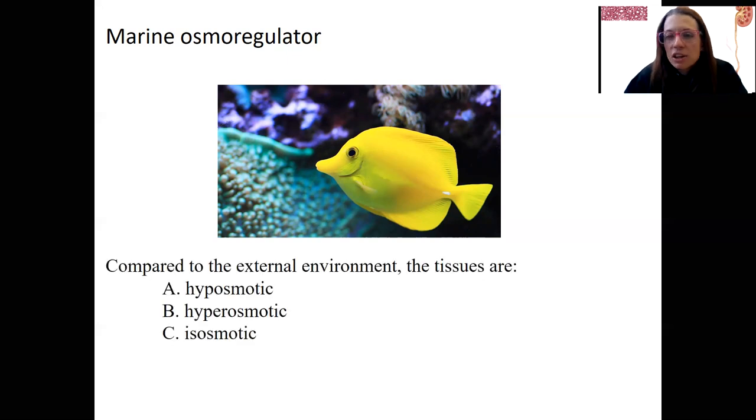So the last picture of non-humans here. So compared to the environment, these tissues are what? Hypoosmotic. Hypo, hyper, iso, got to know those. Lower is hypoosmotic.